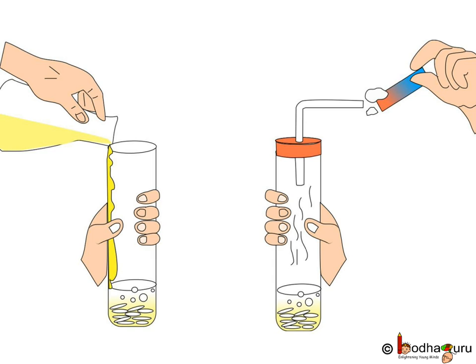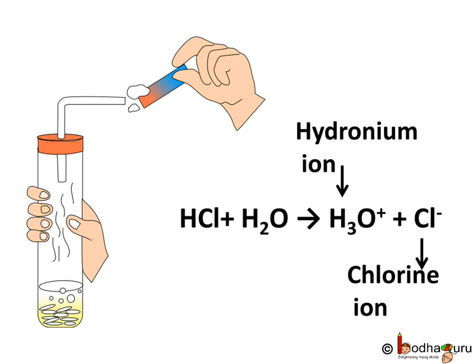If we hold wet litmus paper in this gas, the paper will turn red. Why does the color change only in the case of wet litmus paper? When hydrogen chloride comes in contact with water, it produces hydrogen ions which cause the change of color in the litmus paper. The separation of hydrogen ions from HCl molecules cannot occur in the absence of water. HCl + H₂O gives H₃O⁺ plus Cl⁻ — that is, hydronium ion and chloride ion are formed.